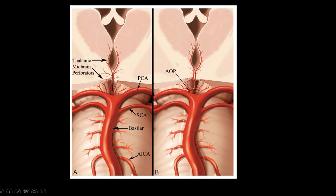In the picture, the normal basilar artery is seen dividing into the PCA, with many perforators from the PCA supplying the thalamus and midbrain. In the Artery of Percheron, a single branch supplies bilateral midbrain as well as bilateral thalamus.